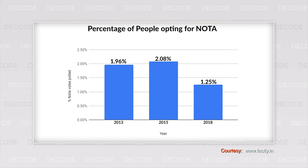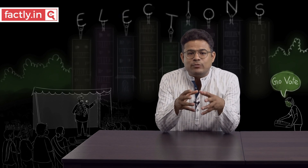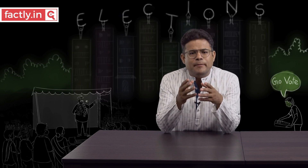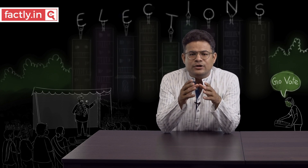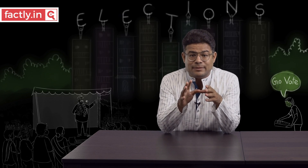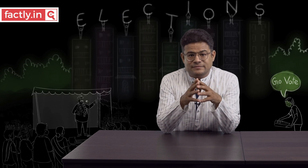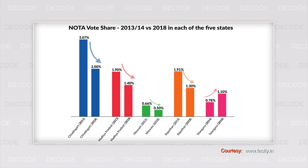It reached 2.08% in 2015, but by 2018 it had reduced to 1.25%. Looking at state-wise numbers, NOTA's vote share crossed the 2% mark only in Chhattisgarh, Bihar, and the Union Territory of Puducherry. In states where NOTA appeared in two different assembly elections, the NOTA vote share decreased in the second election in almost every place — except Telangana, where it went from 0.78% in 2014 to 1.09% in 2018. Otherwise, the general trend shows NOTA percentage decreasing.